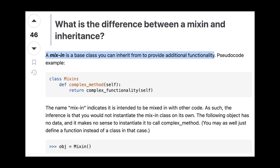The core idea here is that unlike a full-blown parent class, which usually defines the core identity of a class, a Mixin is much more lightweight. It focuses on providing a specific piece of functionality like logging, validation, or sending notifications that can be reused across many different classes.